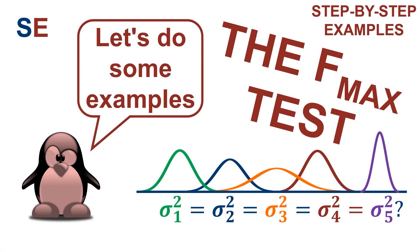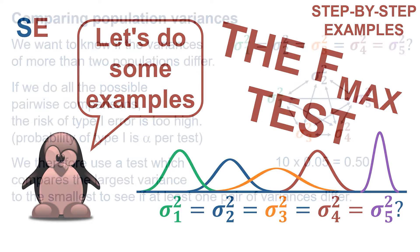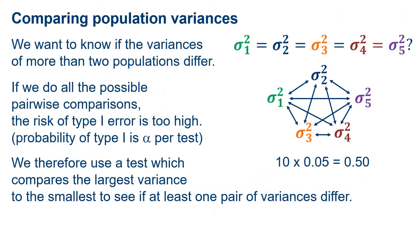The Fmax test is used to test when a set of more than two population variances may have any that differ from each other. Let's take a look at some examples of how to do this test. First, let's review the reasons behind this test. We want to know if population variances differ in a set of more than two populations.